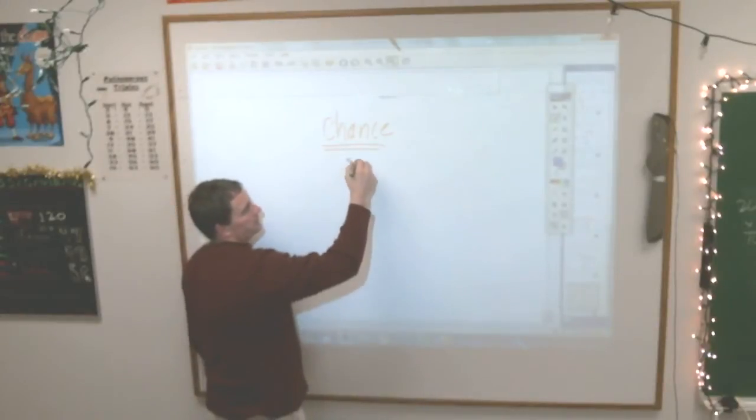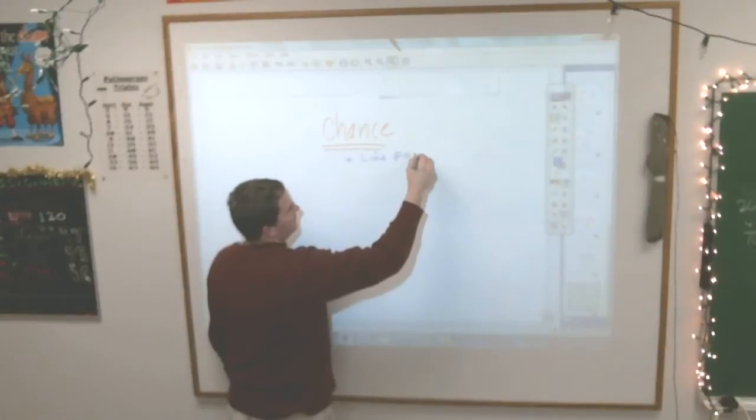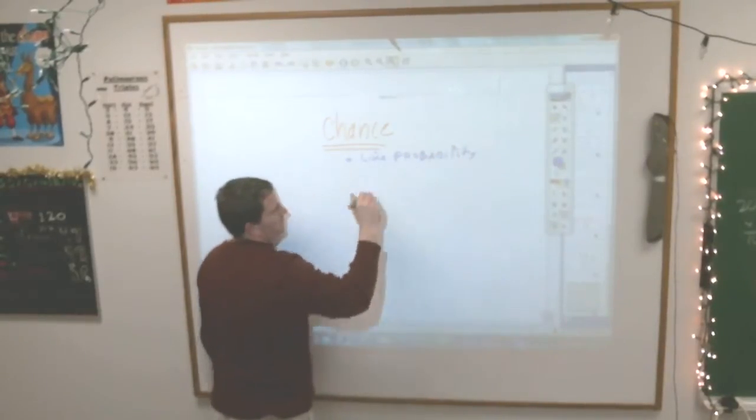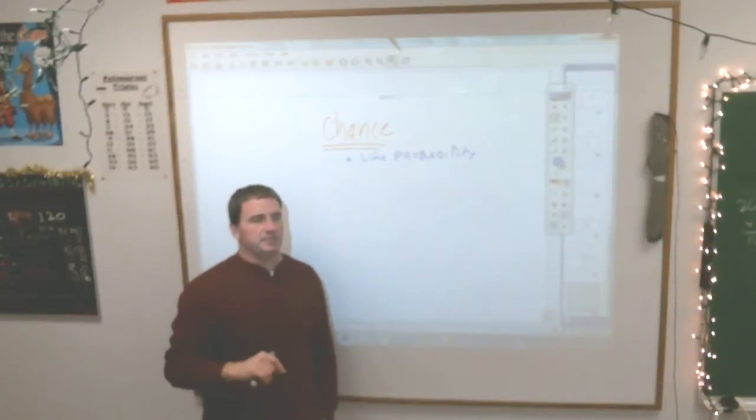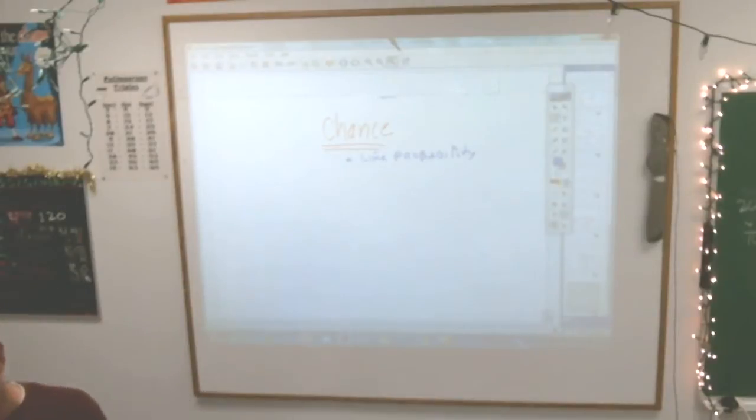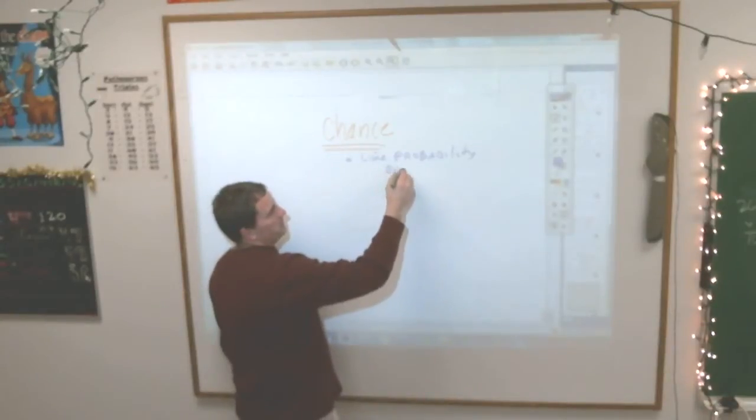It's like probability, except maybe you can figure this out, because when you listen to the weather, they use chance a lot. They say the chance of rain is... oh, you just said it right there, percent. Like probability, but in percent form.